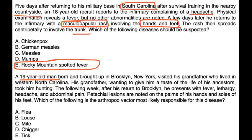A 19-year-old man born and brought up in Brooklyn, New York, visited his grandfather who lives in western North Carolina. His grandfather, wanting to give him a taste of the life of his ancestors, took him hunting. The following week after his return to Brooklyn, he presents with fever, lethargy, headache, abdominal pain. Petechial lesions are noted on the palms of the hands and soles of the feet. Which of the following is the arthropod vector most likely responsible for this disease? Well, Rocky Mountain spotted fever is spread with the vector known as a tick, and that would be choice E.